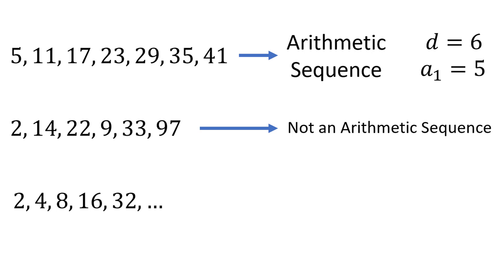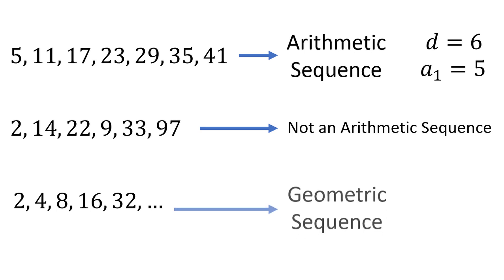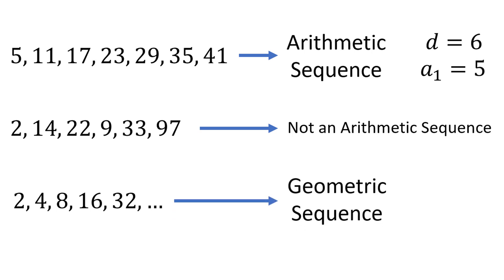There is, however, a common ratio between terms. Each term is twice as big as the previous. It turns out that we call a sequence like this a geometric sequence, which we will discuss more in a separate video.